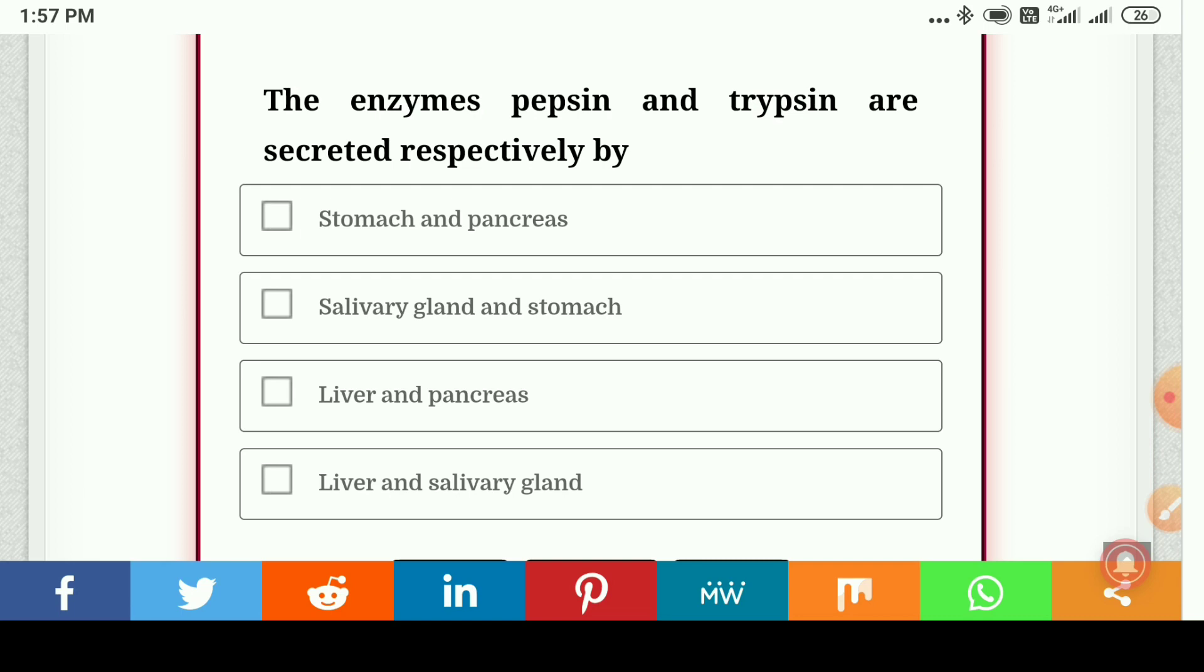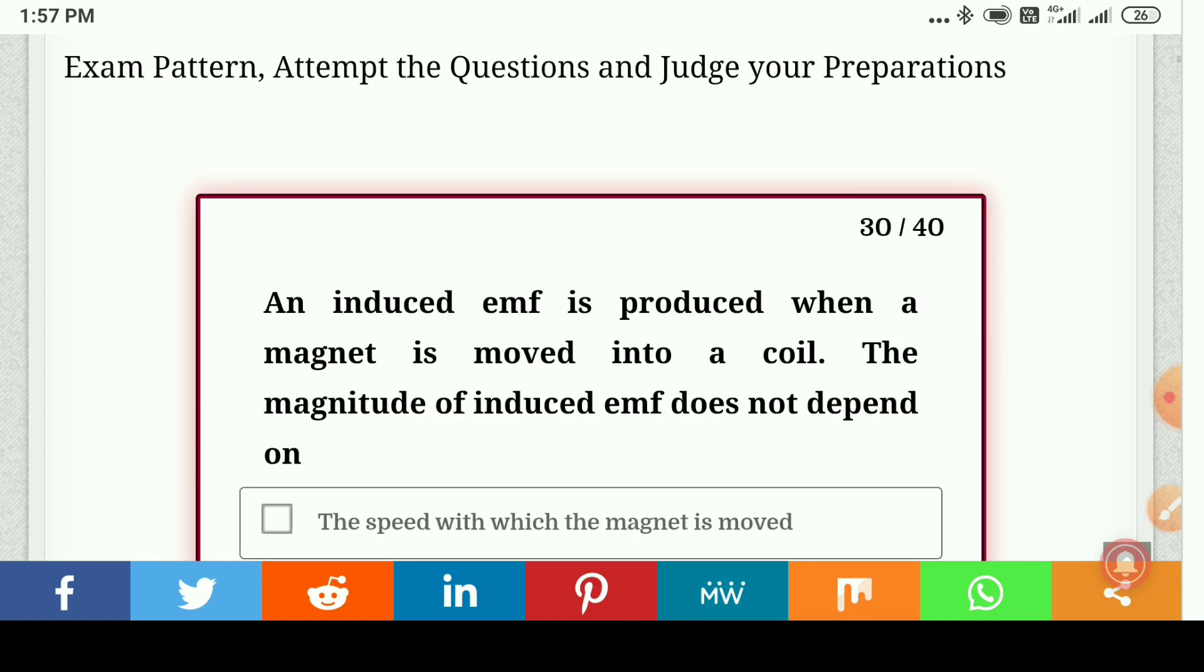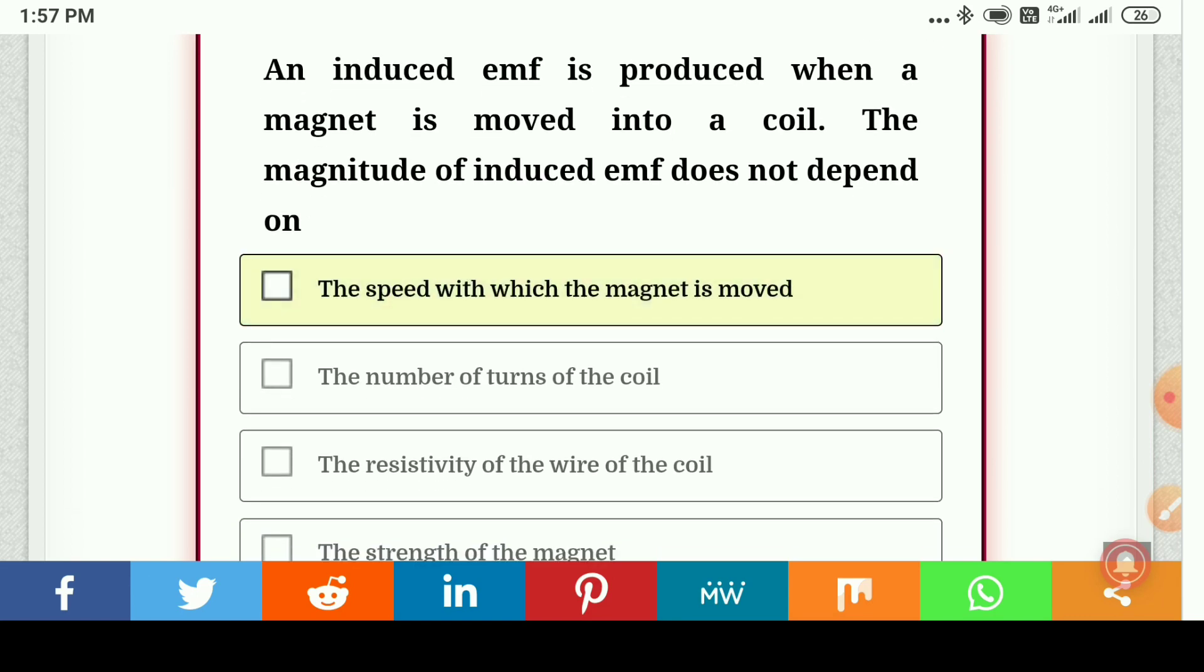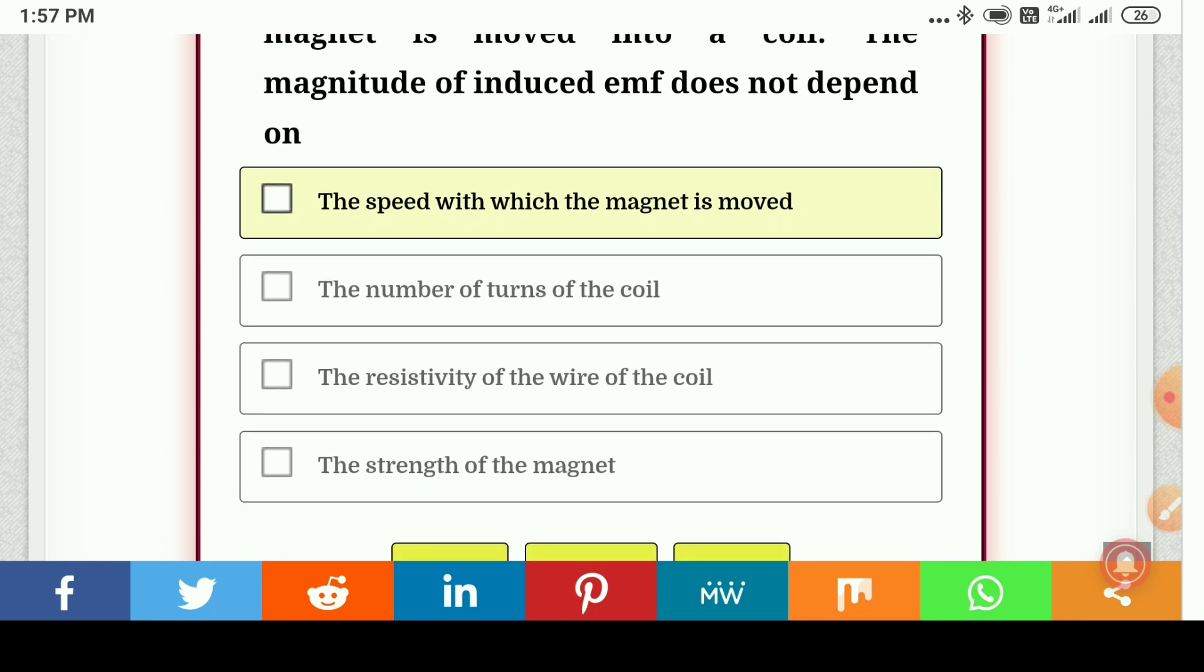An induced EMF is produced when a magnet is moved into a coil. The magnitude of induced EMF does not depend on... the resistivity of the wire of the coil.